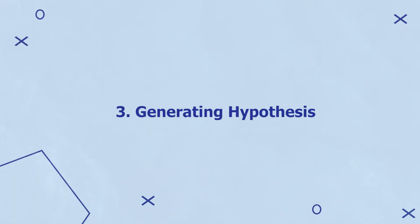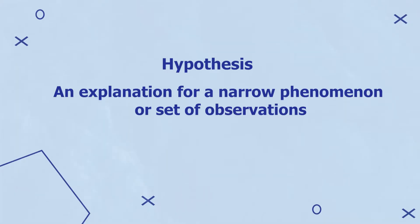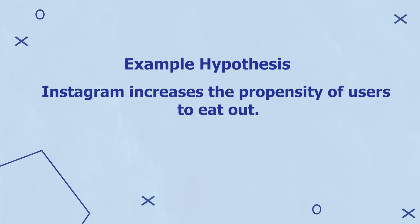Having retrieved our theory, we move to the third step of the research process, which is generating a hypothesis. A hypothesis is defined as an explanation for a narrow phenomenon or set of observations. After retrieving a theory that relates to a research topic, we formulate a hypothesis that is derived from the theory but is more narrowly focused. In my example, I hypothesize that Instagram increases the propensity of users to eat out.